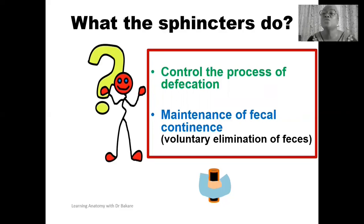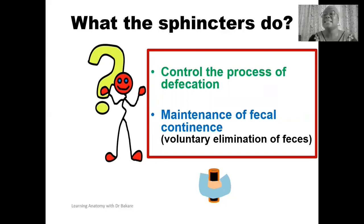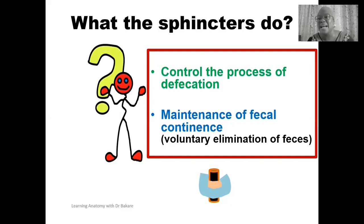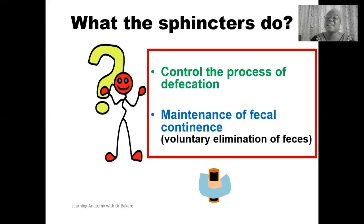As we go through this lecture, we'll see that one of the anal sphincters is a voluntary sphincter, which means we have control over whether it will contract or relax depending on the situation, meaning that the release of feces through the lumen is under voluntary control. Those are the functions of the anal sphincters.